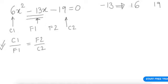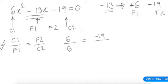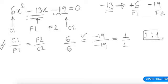Let's try +6 and −19: will they add to give −13? The answer is yes. This is purely by trial and error and practice. c1 is 6. Checking the ratio c1/f1 = f2/c2 — they are equal, giving a ratio of 1 to 1.